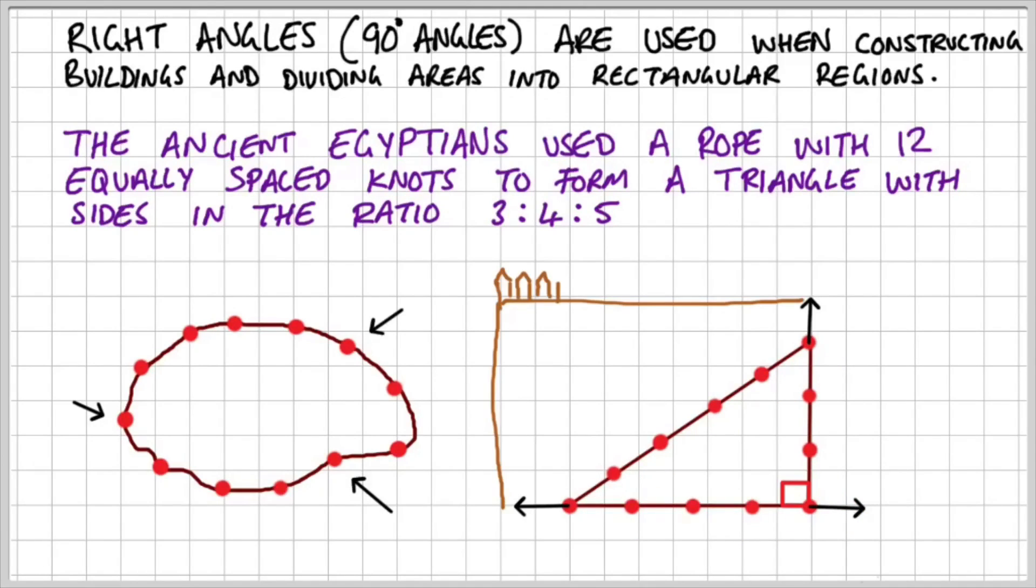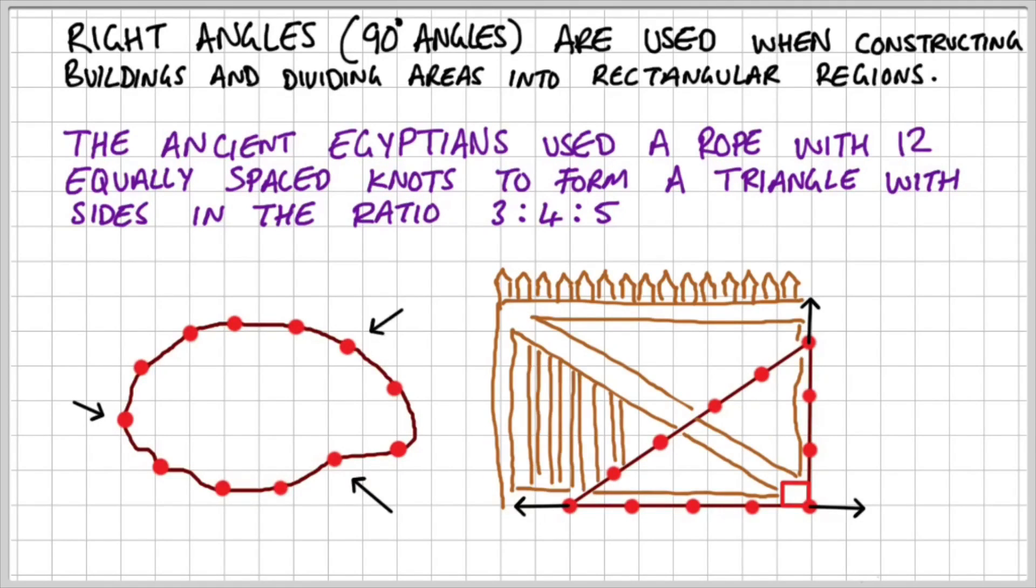Now unlike the ancient Egyptians who built the Pyramids of Giza, we can use Pythagoras' theorem and right angle triangles to construct everyday items, such as this picket fence.